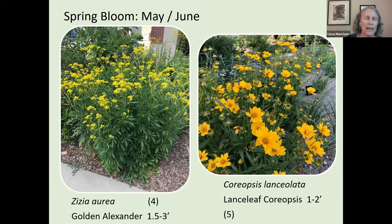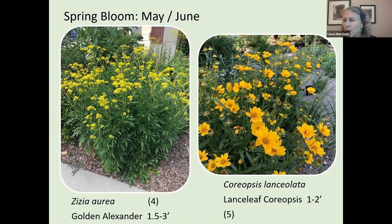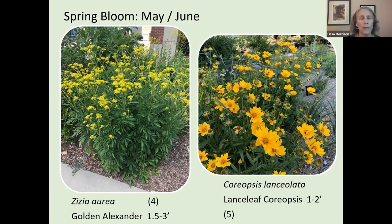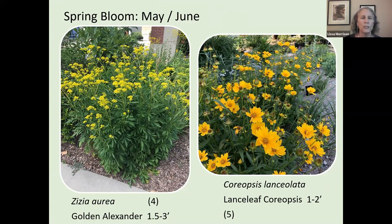Golden Alexander is a host plant for the black swallowtail butterfly. It is also a showy plant that attracts other bees and butterflies. After it blooms, I would cut it almost in half and it'll stay attractive — the foliage has good fall color, it has four to five weeks of yellow blooms, and it blooms just about the time the black swallowtail needs it as a host plant.